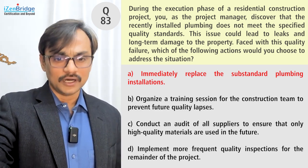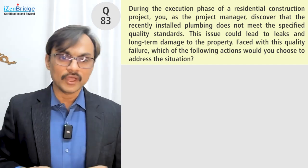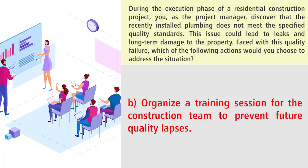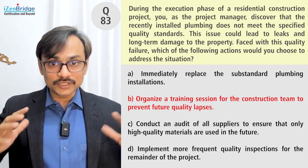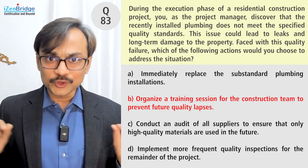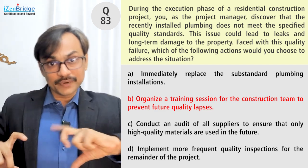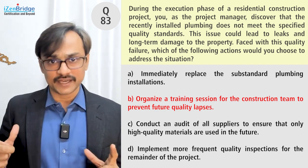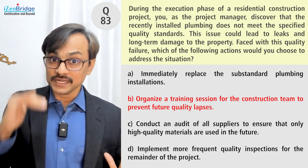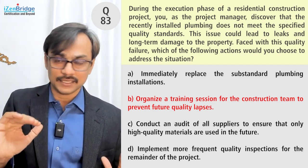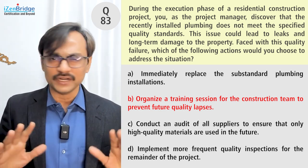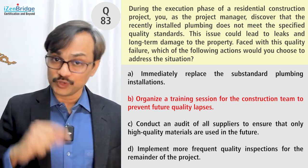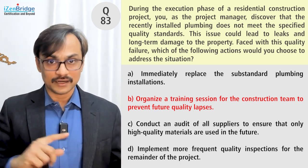Option B: organize a training session for the construction team to prevent future quality lapses. This is not taking care of the current issue. The question is asking what you do about a quality failure right now, and jumping into preventive actions before corrective actions is not a good idea. Option A is still better than this. I need to look for a better option if I can find it, but Option B is talking about prevention, and I need to do corrective action first, then preventive.